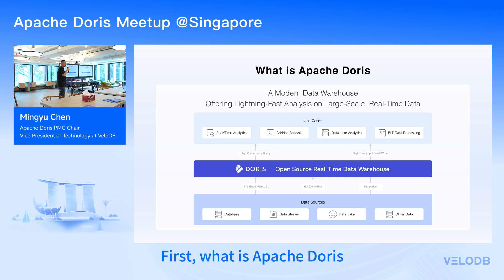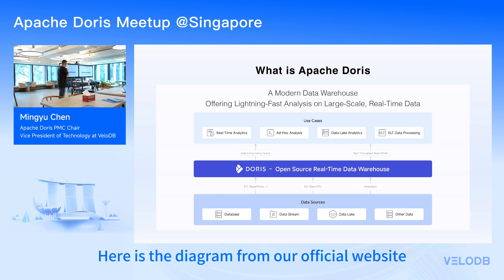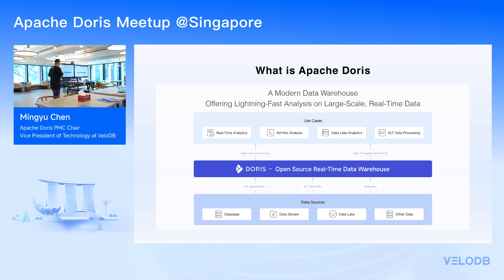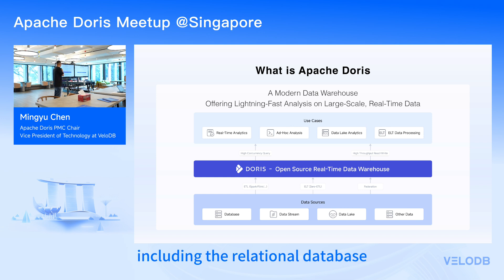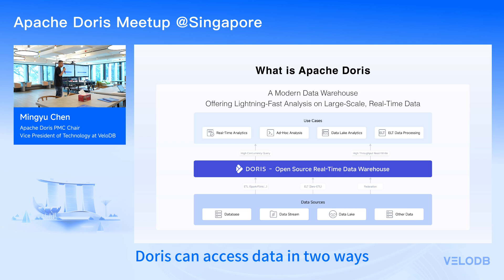First, what is Apache Doris? In one line, it's a modern data warehouse offering lightning-fast analysis on large-scale real-time data. Here is a diagram from our official website showing where Doris fits in a big data platform. The upstream systems include relational databases, data streams like Kafka and Pulsar, and data on the data lake — structured or semi-structured data.